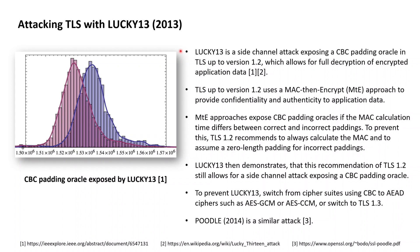Although self-admittedly more of a theoretical attack due to some very delicate time measuring involved, Lucky 13 still needs to be taken seriously. A first measure on how Lucky 13 can be prevented is by disabling all cipher suites using the CBC block cipher mode of operation and switching to cipher suites that make use of authenticated encryption with associated data ciphers, such as AES in GCM or CCM mode.